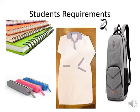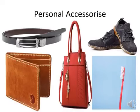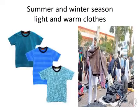For students' requirements, school uniforms, bags, and book binding all involve different fibers and textile products. In the home, textile products can be seen everywhere — bed sheets, curtains, sofa covers, cushions, carpets, kitchen aprons, and towels are all textile products. Personal accessories such as belts, wallets, shoes, handbags, and toothbrushes also involve different fabrics.